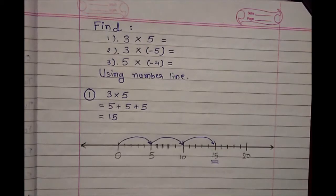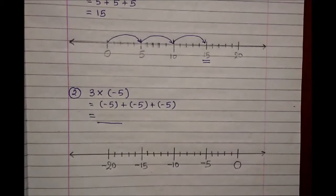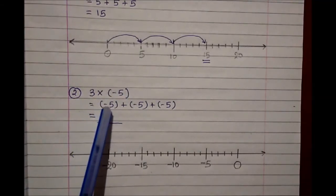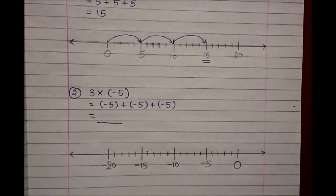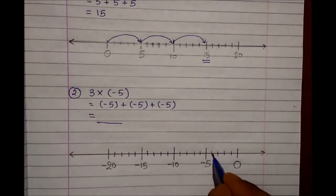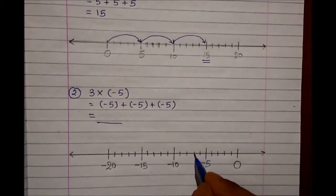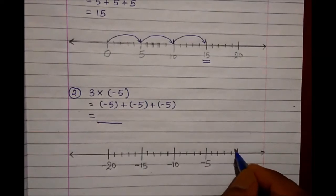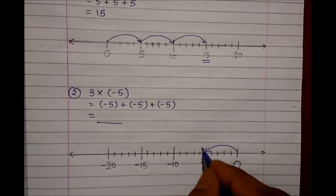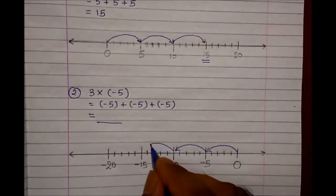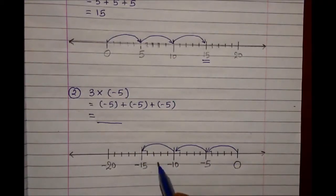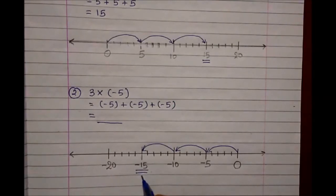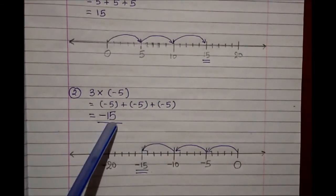Now let's do the second one: 3 into minus 5. We have to take minus 5 three times — 1 time, 2 times, and 3 times. On the number line we have 0, minus 1, minus 2... down to minus 15 and so on. Taking minus 5 three times, the answer comes to minus 15. So 3 into minus 5 is nothing but minus 15.